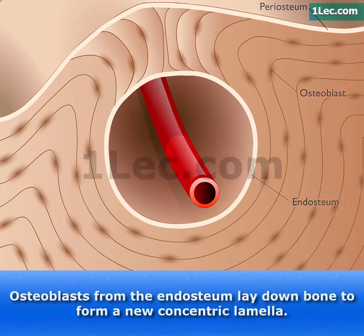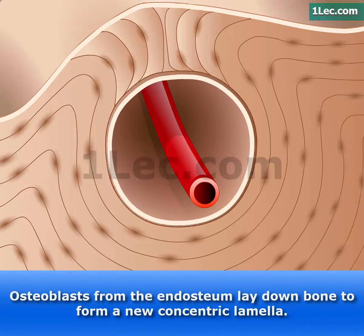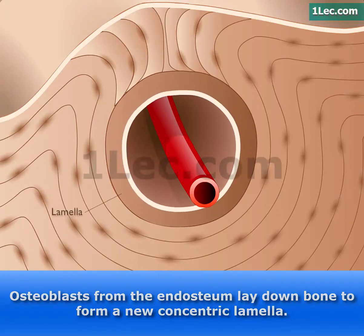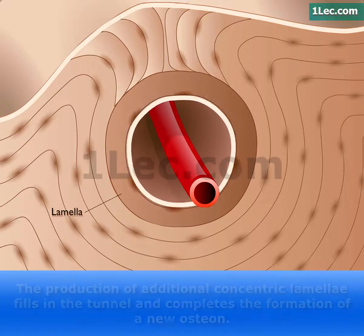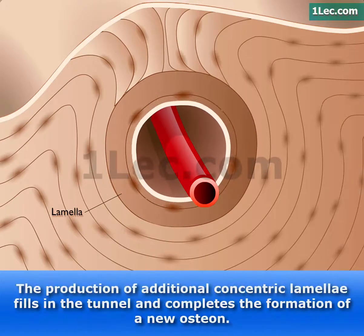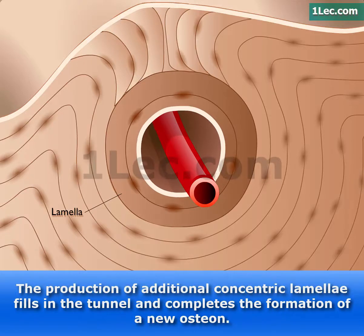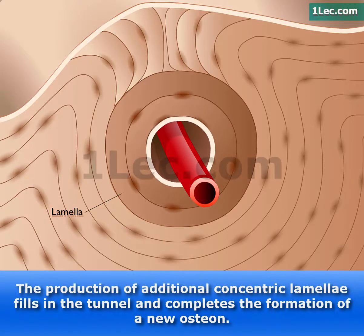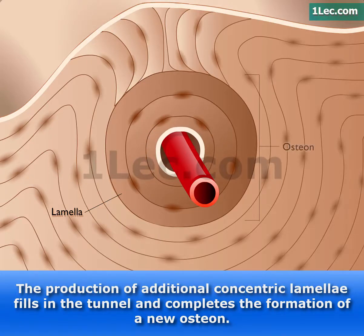Osteoblasts from the endosteum lay down bone to form a new concentric lamella. The production of additional concentric lamellae fills in the tunnel and completes the formation of a new osteon.